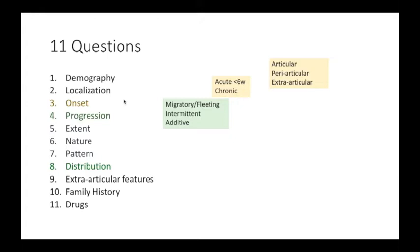In intermittent arthritis, you have pain, then it stops, then you have pain again, and then it stops for some time. There are increases and decreases in the course of the disease. In an additive kind of progression, one joint is involved and doesn't settle down; you get another joint involved which doesn't settle down, and then another joint gets involved.